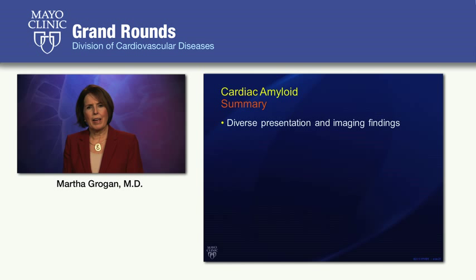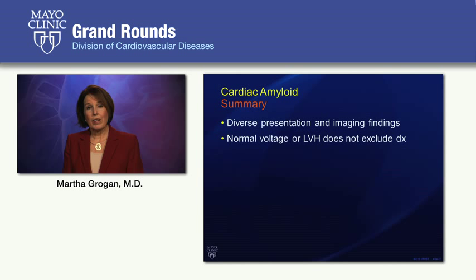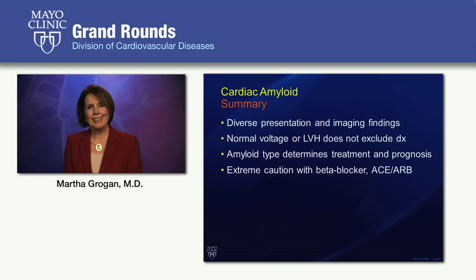In summary, as cardiologists and internists, cardiac amyloidosis has a very diverse presentation and diverse imaging findings. Classic amyloidosis is easy to recognize, but variants are not. Normal voltage or even LVH criteria do not exclude the diagnosis. The amyloid type is crucial in determining treatment options and prognosis — senile amyloid is not at all the same as AL amyloid and has a much better prognosis.